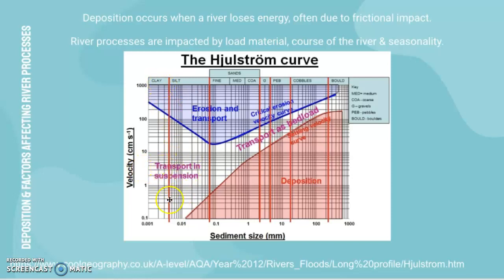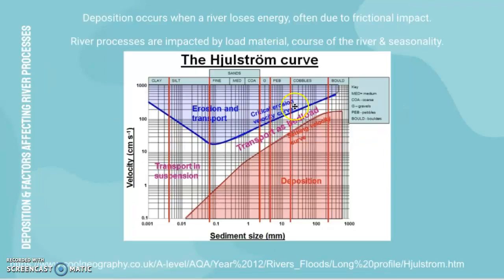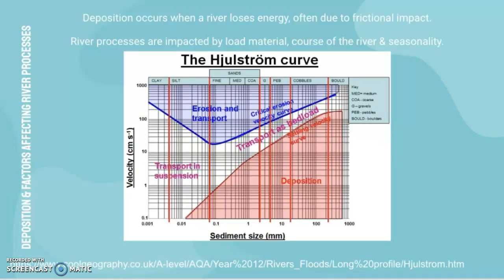Looking at transportation on the Hjulström curve: clay and silt are largely transported by suspension, while larger sediments are transported as bed load. Suspension moves material in the river flow, whereas bed load involves traction and saltation. For deposition, as sediment size increases from around 0.01 onwards, more velocity is needed to settle a larger load.